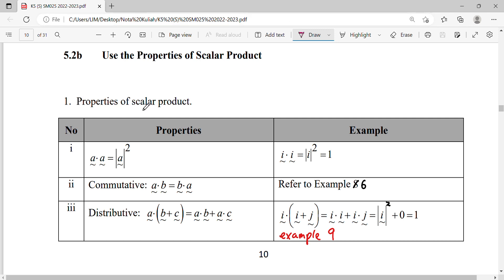Okay, so now you look at properties of scalar product. When you have the same vector A dot A, it will be equal to magnitude A squared. For example, I dot I equals magnitude I squared, where we know magnitude I is 1.